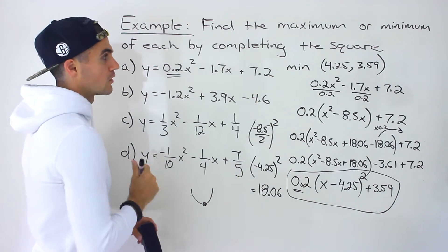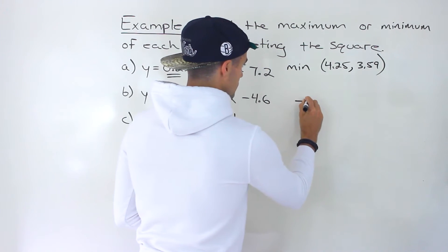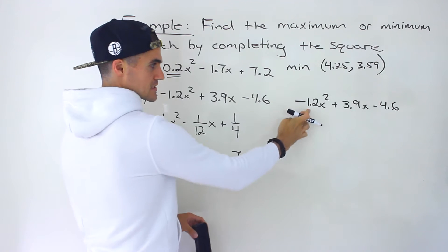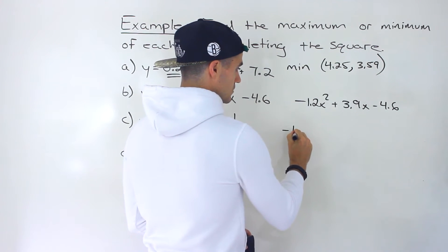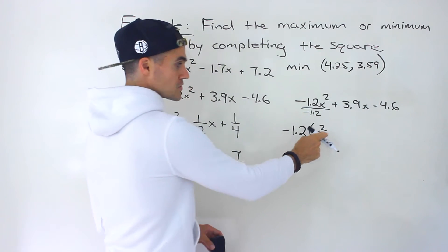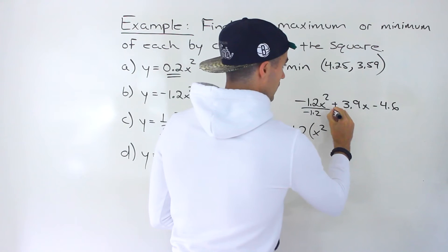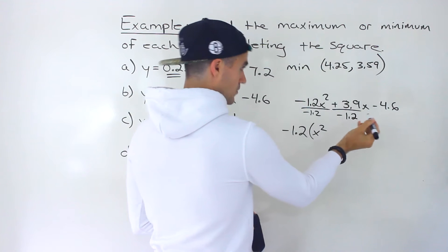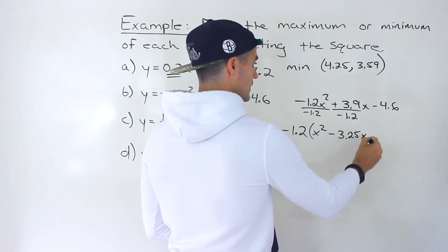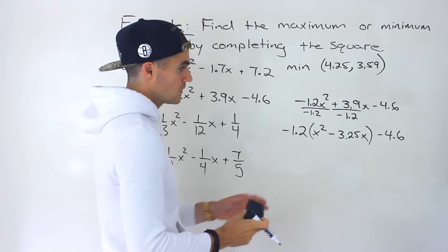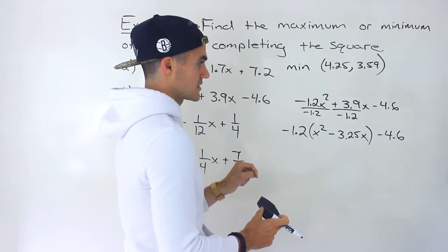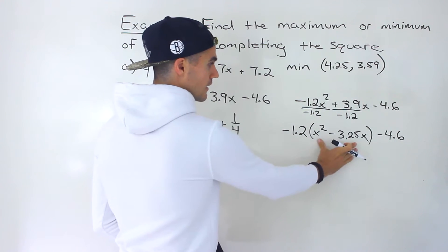Moving on to part b: negative 1.2x² plus 3.9x minus 4.6. Same thing — there's an 'a' value, so we factor it out. It's negative, so the signs inside change. Dividing by negative 1.2 leaves x², and 3.9 divided by negative 1.2 gives negative 3.25x. We leave negative 4.6 at the end. You can redistribute negative 1.2 back in to verify the factoring is correct.